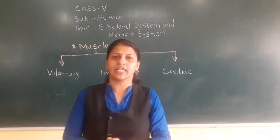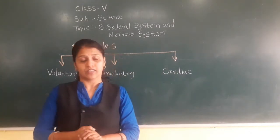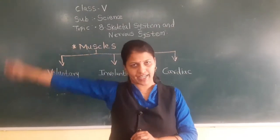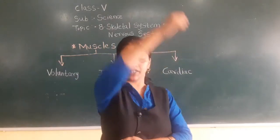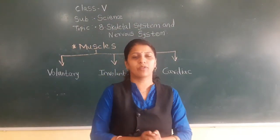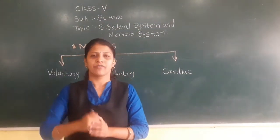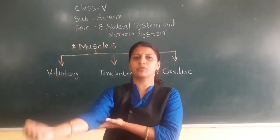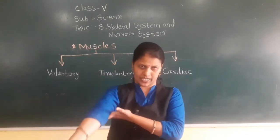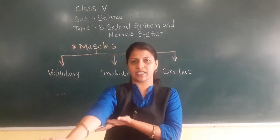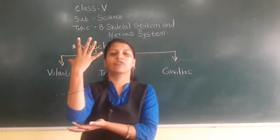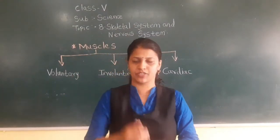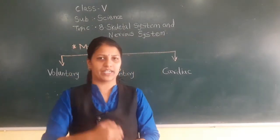The ball and socket joint can move in all directions — your hand can move in all directions. Then we have learnt about the hinge joint, which is present in the elbow. The hinge joint moves only in one direction. Hinge joint is present in the elbow, fingers, and knee.